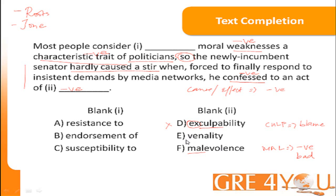Option E, venality, means corrupt. A venal person is corrupt, especially open to bribery and other such acts. So in the context of the sentence, option E is a better choice for the second blank.